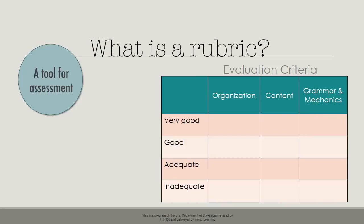Next, a rubric describes the different levels of mastery. In this rubric, the teacher can describe the essay's organization as inadequate, adequate, good, or very good. Each area will be assessed like this.